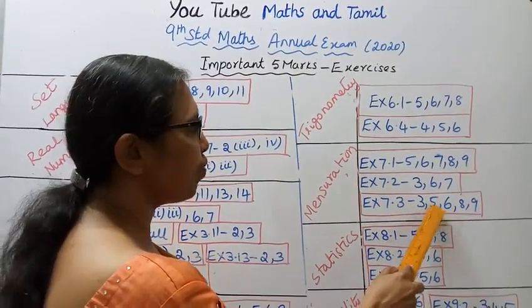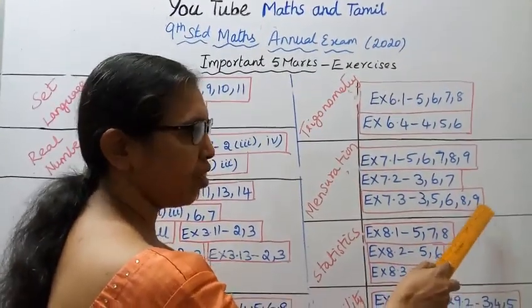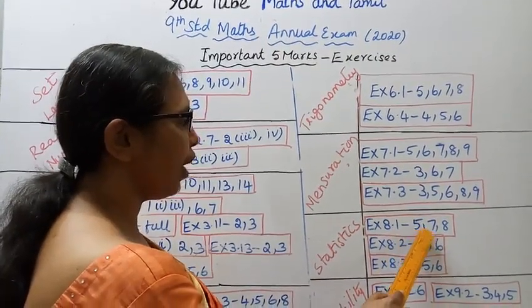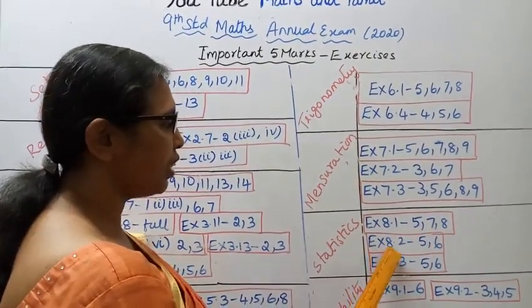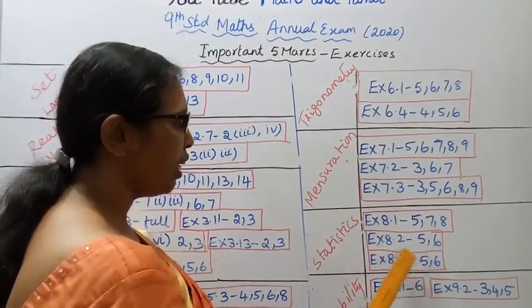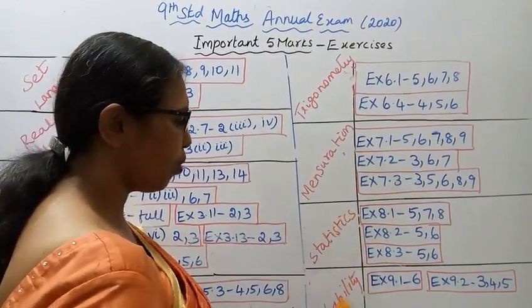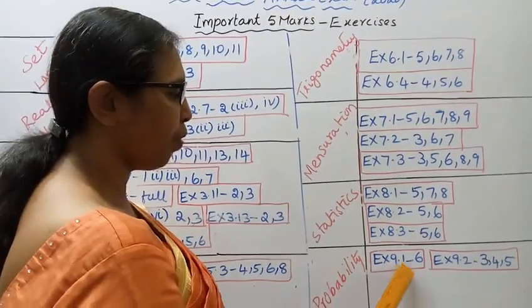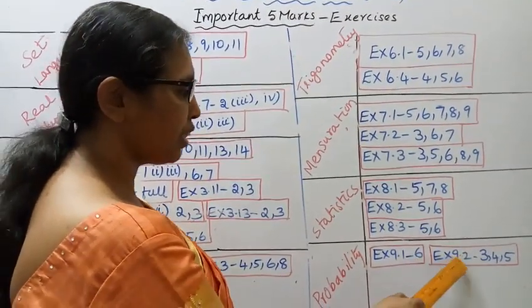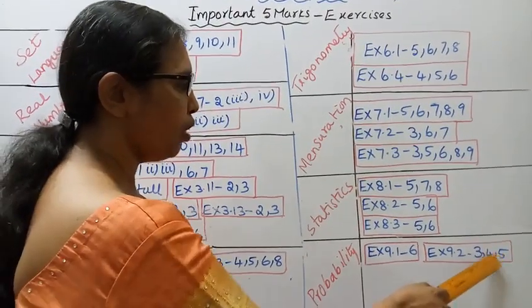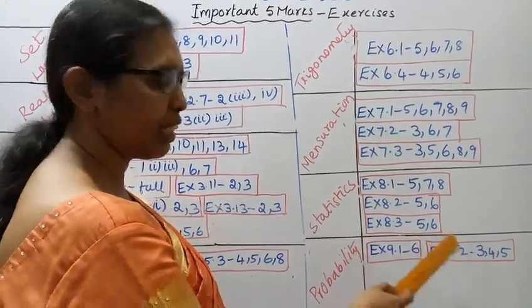Statistics. Exercise 8.1: problems 5, 7, 8. Exercise 8.2: problems 5, 6. Exercise 8.3: problems 5, 6. Probability. Exercise 9.1: problems 6, 7. Exercise 9.2: problems 3, 4, 5.